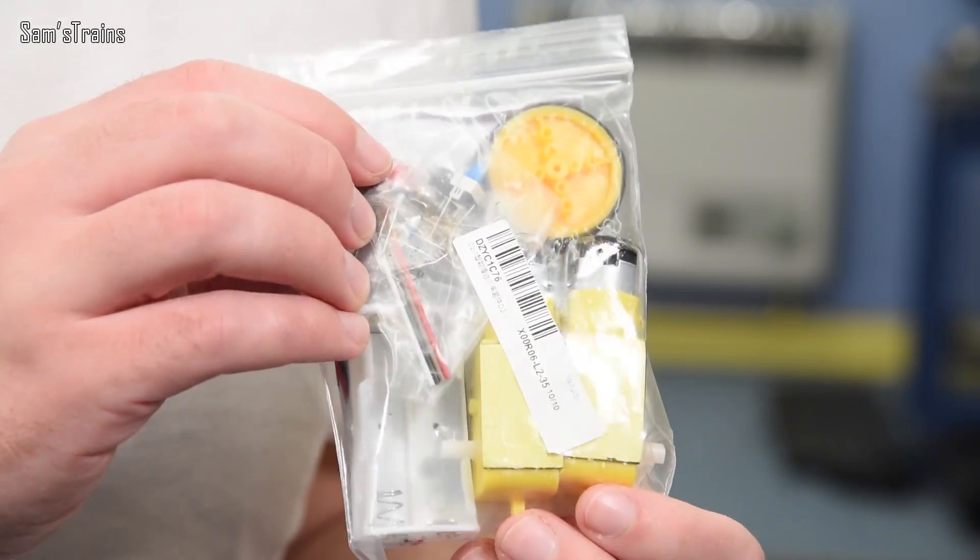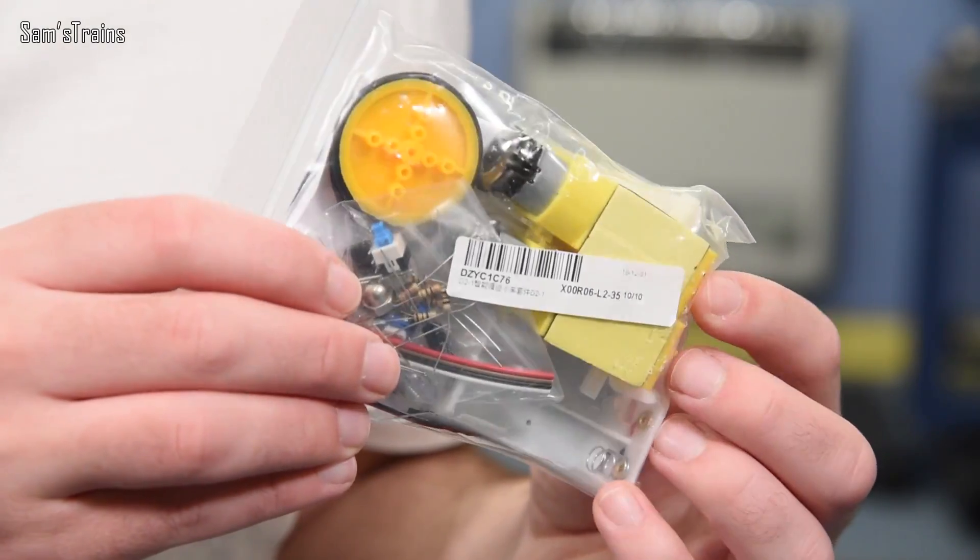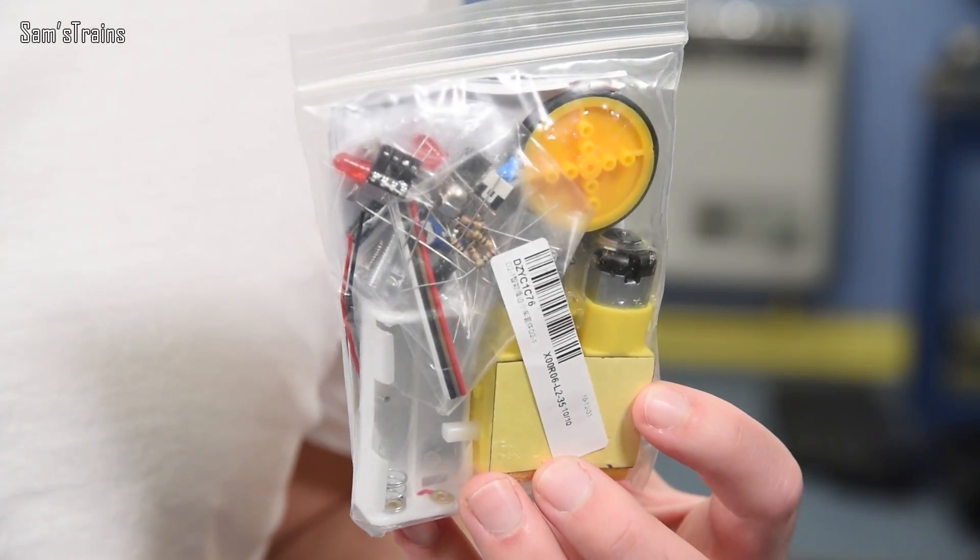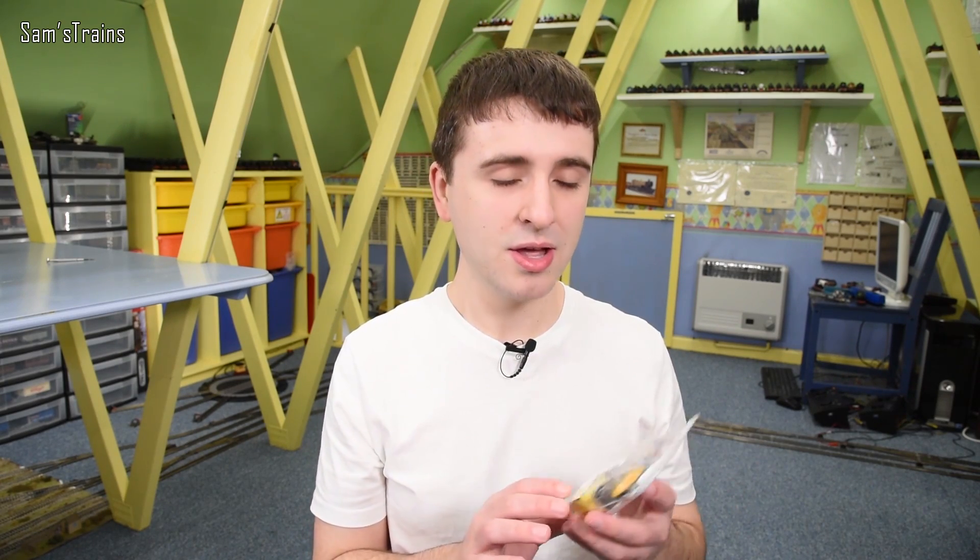So I was perusing online and I was looking at some different electronic kits and I came across this. Now it just looks like a bag of parts, and yes, obviously as a kit you do have to put these together, but the finished image which was on the listing looked really cool. So it's a little car basically that follows the line, and I thought this is just too cool not to try.